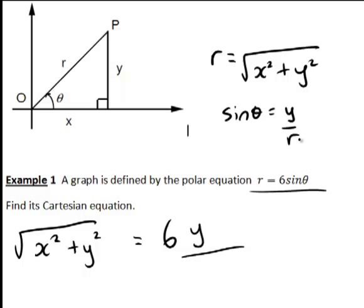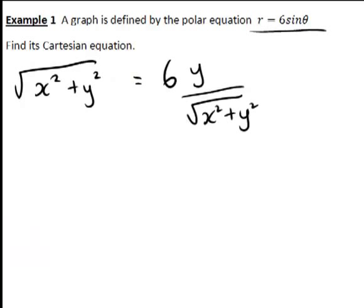But we're wanting to rewrite all of it in terms of x and y, so rather than y over r, it can be written as y divided by square root of x squared plus y squared. That in fact is the Cartesian equation of the curve. However, we would usually go a bit further, because it's not very clear what that curve is going to look like.